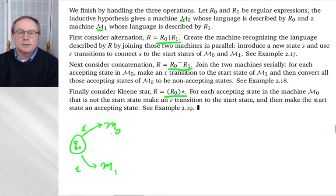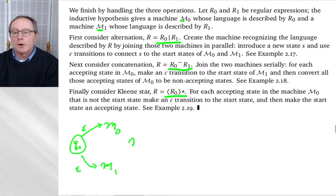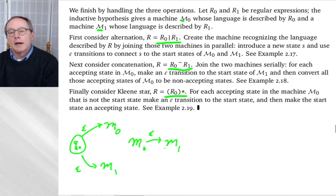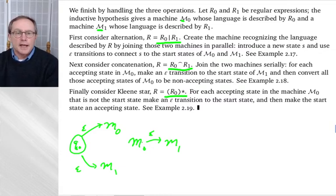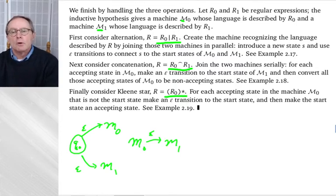Concatenation calls for serial joining. You take M0 and make an epsilon transition to M1. There's some bookkeeping: the epsilon transition only goes from the final states of M0 to the start state of M1, and you erase the double circle on those final states of M0. But the main idea is that you're making a serial connection.